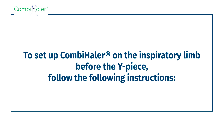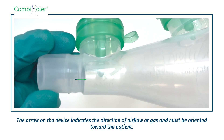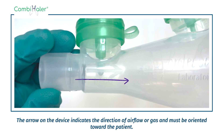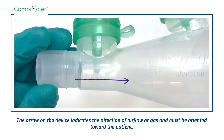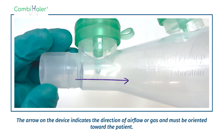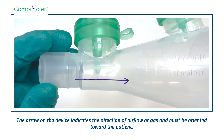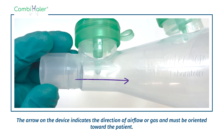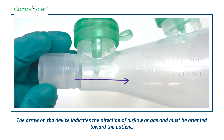To set up Combihaler on the inspiratory limb before the Y-piece, follow the following instructions. The arrow on the device indicates the direction of airflow and must be oriented toward the patient.